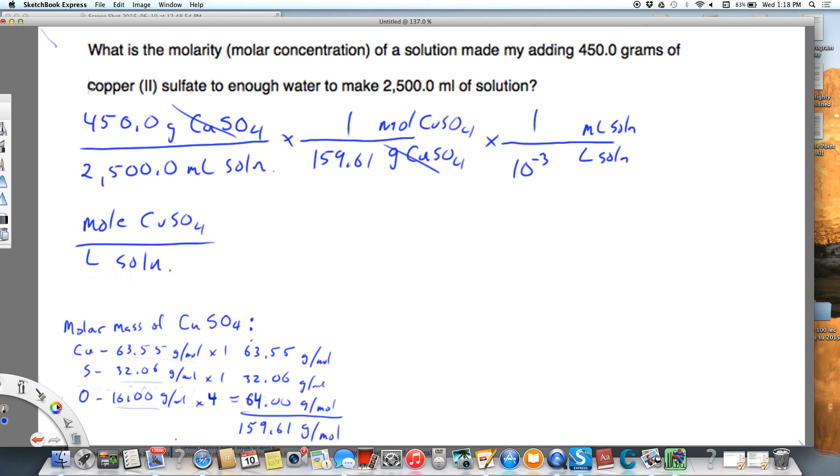What are we going to do? To put it in our calculator, we're going to take 450.0, divide that by 2500.0, then divide that by 159.61, and then divide that by 10 to the minus 3, that's .001. And this is going to equal 1.123 moles CuSO4 per liter solution.